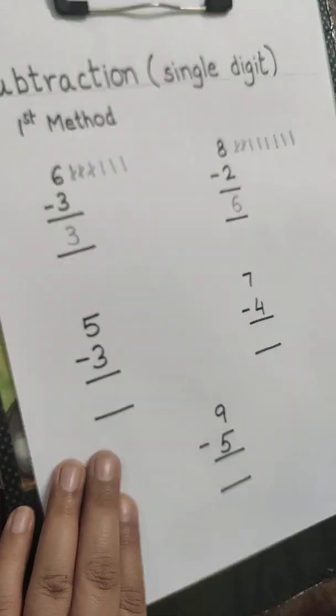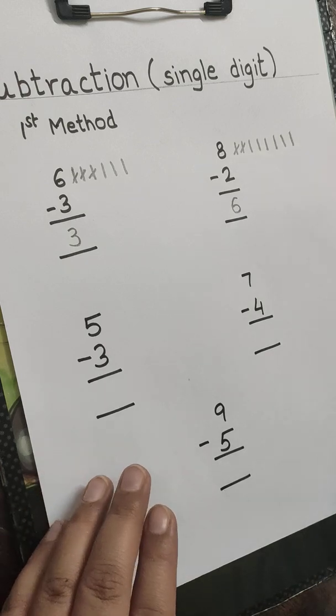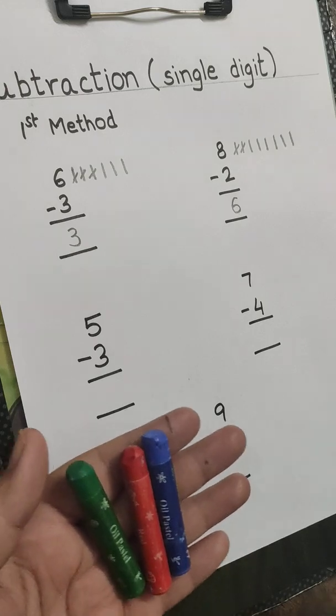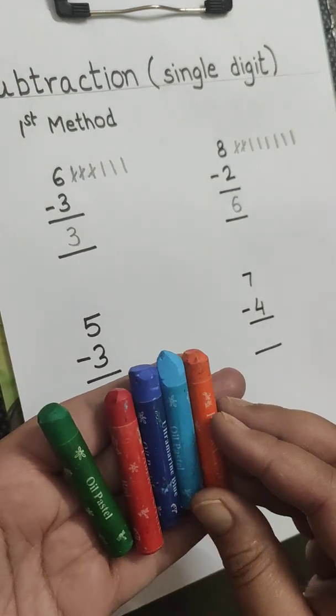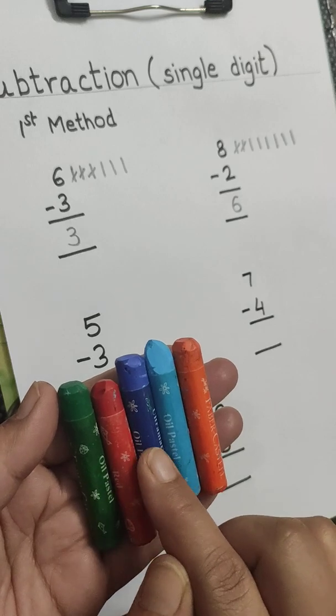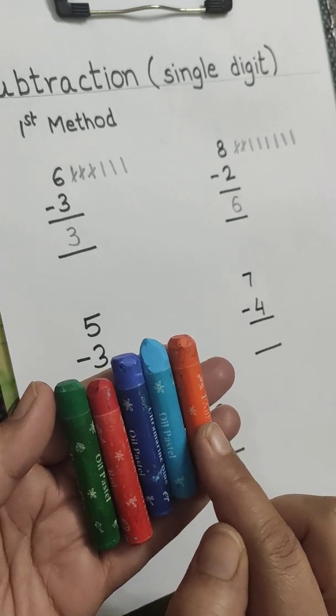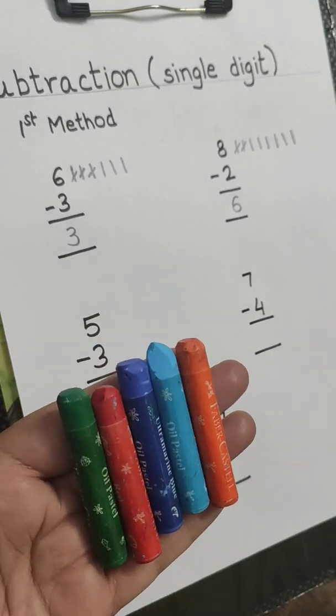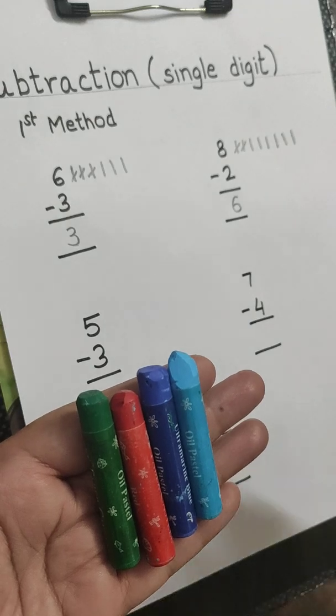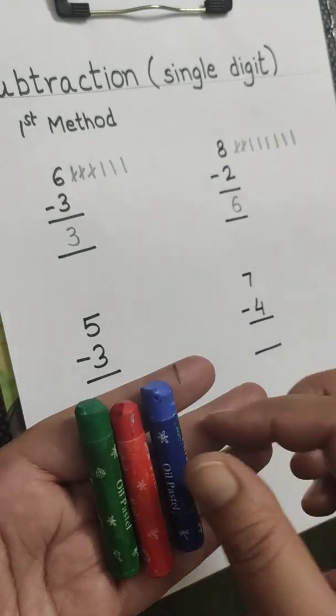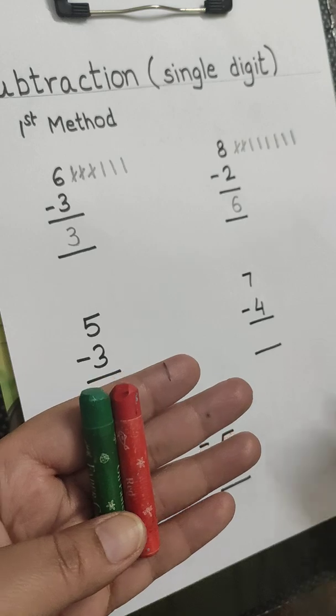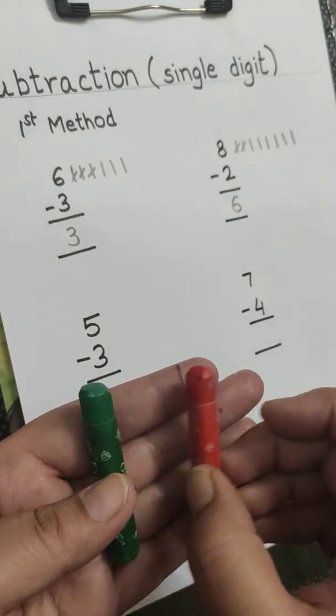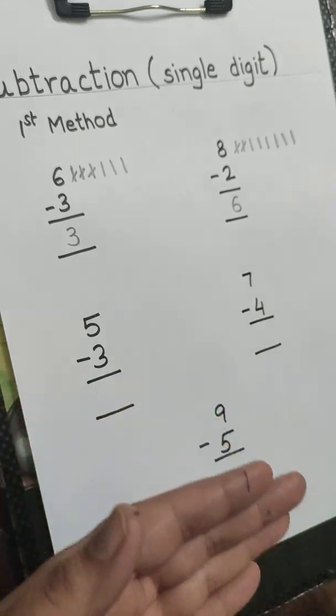5 minus 3. We can use different objects also to clear the concept. So here you can see that I have taken 5 crayons: 1, 2, 3, 4, 5. 5 minus 3, so I will take 3 crayons: 1, 2, 3. So how many are left when I have taken 3? How many are left? 1, 2.